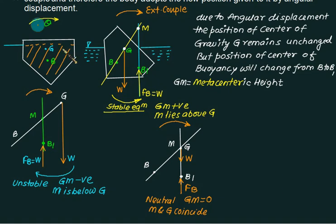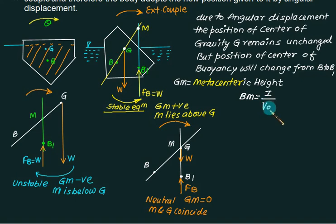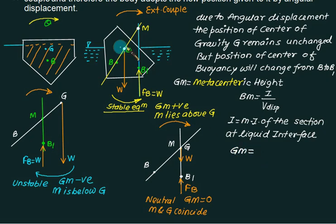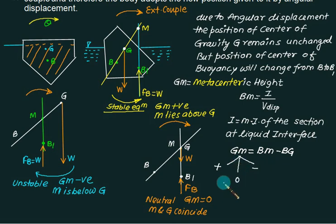We are only interested in stable equilibrium, where GM is positive. To find GM, we first calculate BM, which is given by the moment of inertia of the section at the liquid interface divided by the volume displaced: BM = I / V. For cylinders and rectangles the cross-section remains constant; for a cone it must be recalculated. Then GM = BM − BG. If GM is positive — stable; negative — unstable; zero — neutral.